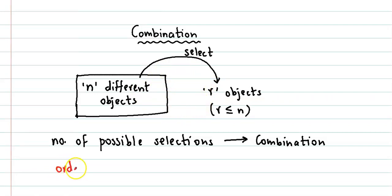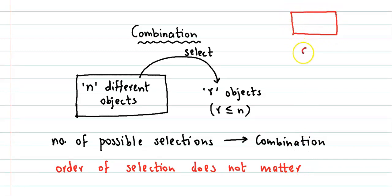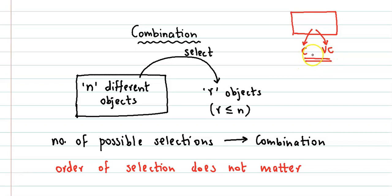In combination, the order of selection does not matter. For example, suppose you have a team of players and you have to select a captain and vice captain. Whether you select player A first or player B first, that won't make any difference — the selection is considered one and the same. So in combination, the order of selection does not matter.